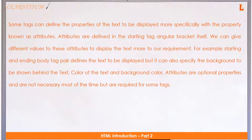Some tags can define the properties of the text to be displayed more specifically with a property known as attributes. Attributes are defined in the starting tag's angle brackets themselves. We can give different values to these attributes to display the text more to our requirement.